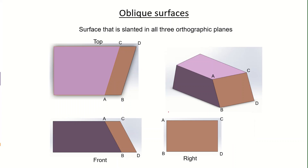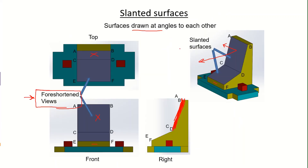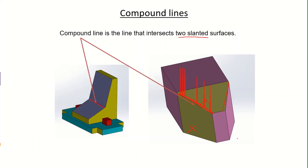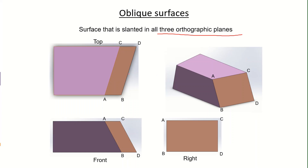Oblique surfaces are surfaces which are slanted in all three orthographic planes. Unlike slanted surfaces, which are inclined in only two orthographic directions — and appear as a line in the third view — oblique surfaces show projected surfaces in all three orthographic directions. There is no direction in which an oblique surface appears as a line.